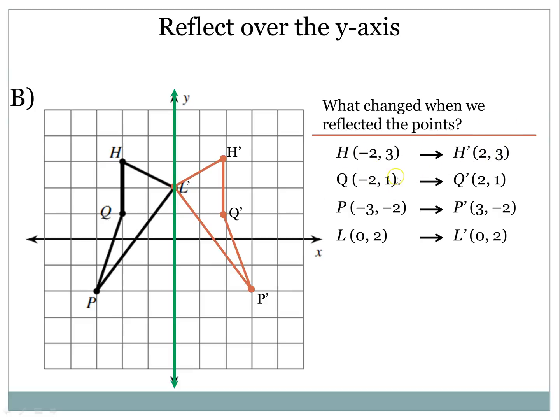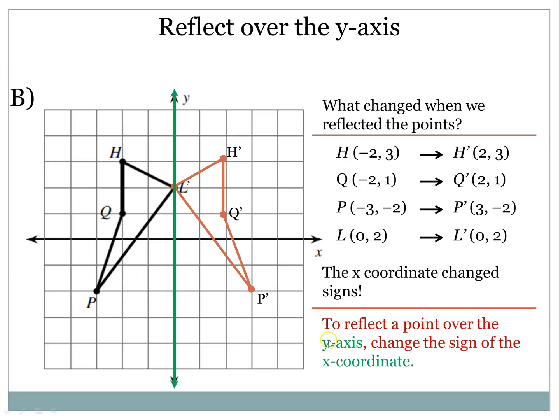From Q to Q prime, from negative 2, 1 to 2, 1. For point P, from negative 3, negative 2, it became 3, negative 2. And as you see down this list of all the primes, you'll notice what's changing. In fact, it is the x-coordinate that changed. You might say, hey, look, L, it's not changing, but that's because 0 has no sign, so it can't. So really, what that means is that when you reflect over the y-axis, you are changing the sign of the x-coordinate.